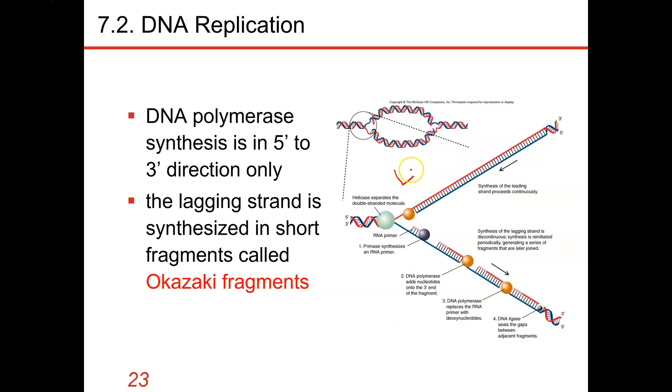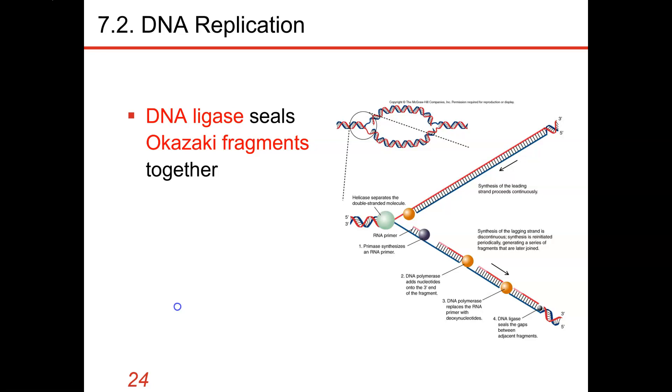I've talked about the leading strand and the lagging strand. In the leading strand, we're producing DNA continuously. On the lagging strand, we're producing these tiny little fragments, so that's discontinuous replication. Those tiny fragments are called Okazaki fragments, discovered by an individual named Okazaki. DNA ligase seals the Okazaki fragments together to help produce a smooth copy on both the lagging and the leading strand of DNA.